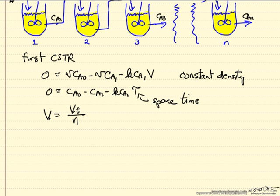We can write the same kinds of equation for the second reactor. The second CSTR, steady state, no accumulation, Ca1 now is the feed, Ca2 is leaving, reaction occurring at concentration Ca2, and the same value for tau.